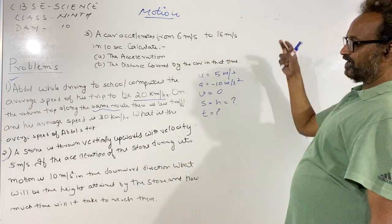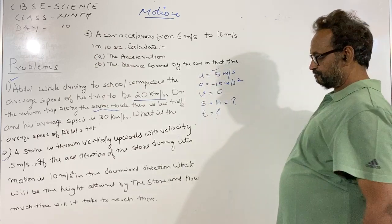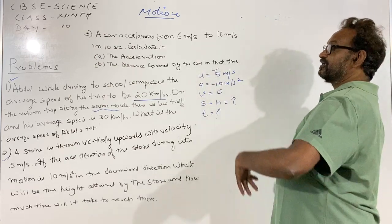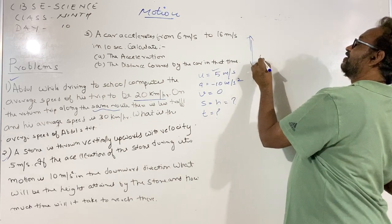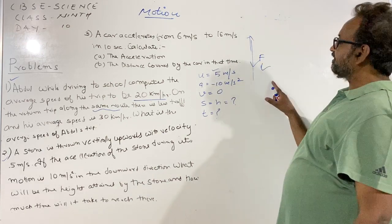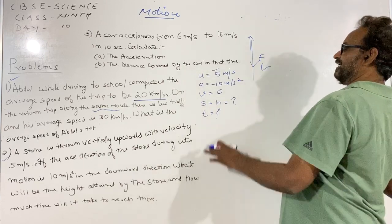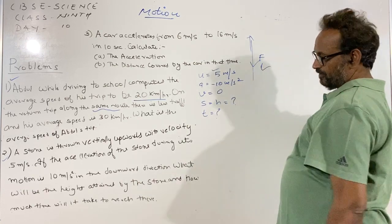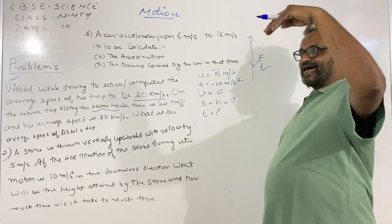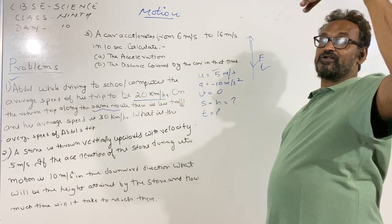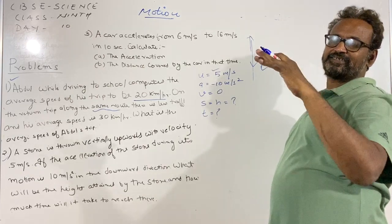When an object is thrown vertically upwards, due to the gravitational pull of the earth, a negative acceleration is produced in the object, and this acceleration is given as minus 10 meters per second squared. When an object is thrown vertically, it will rise up and its velocity will decrease progressively, and when it reaches the maximum height, its velocity will become 0.